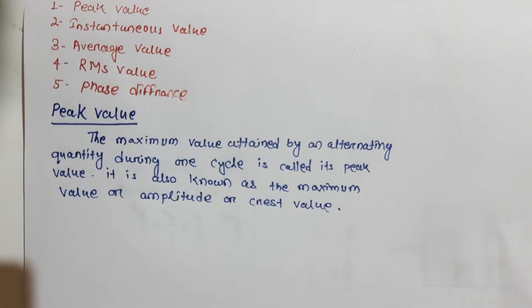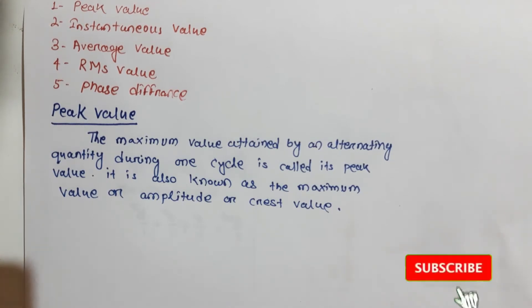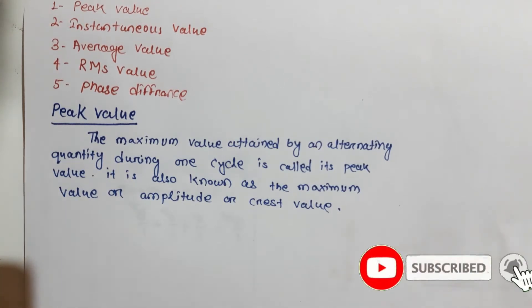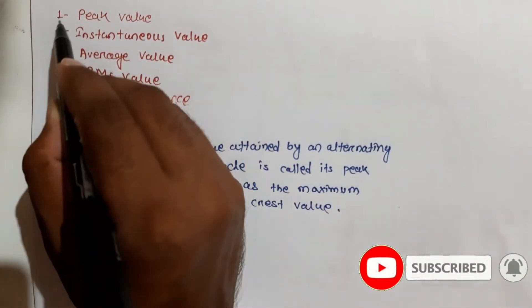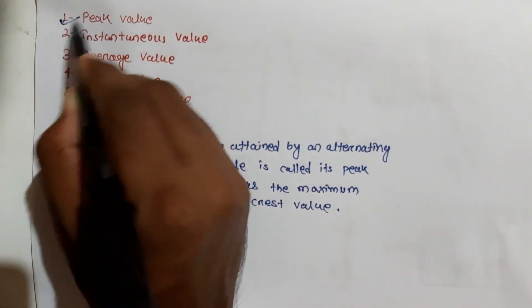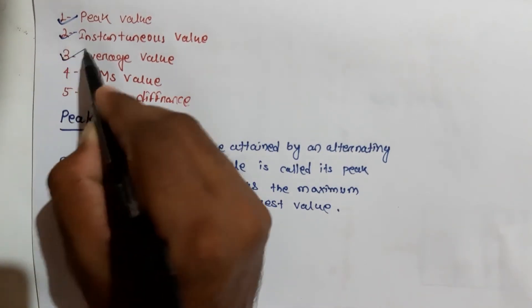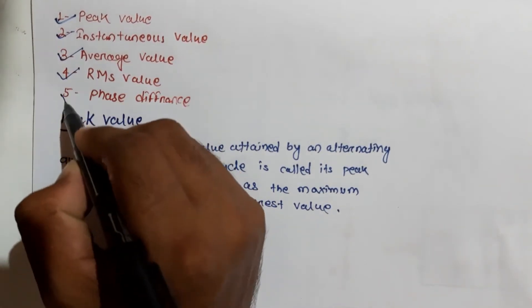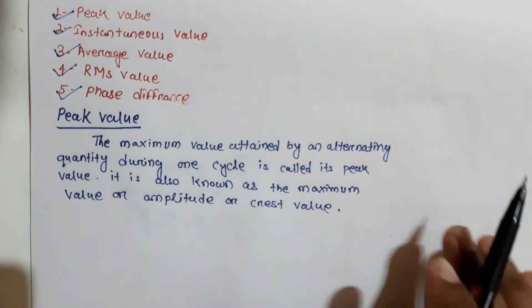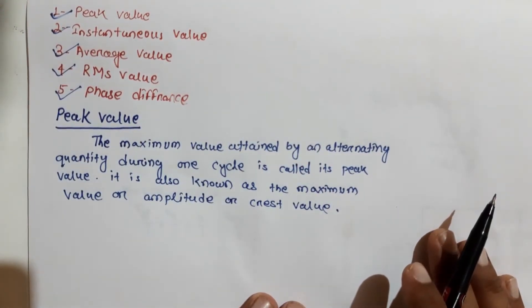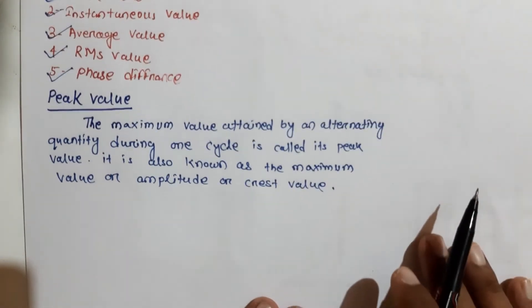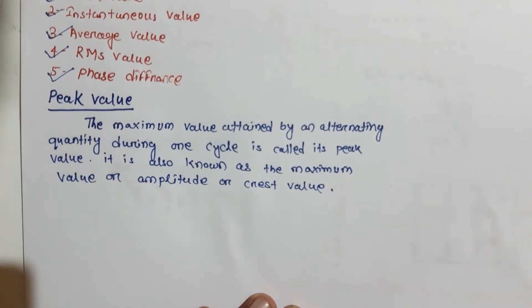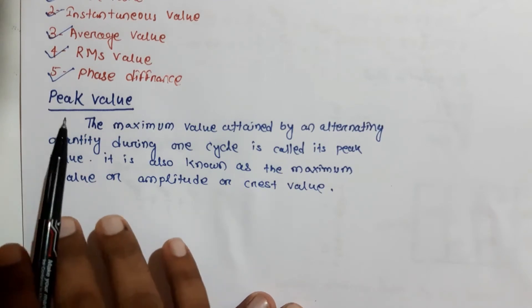Hello friend, welcome to my YouTube channel, Electrical Boost. Today we are going to discuss some terminology related to AC theory. We will discuss five terms: peak value, instantaneous value, average value, RMS value, and phase difference — all related to alternating current.